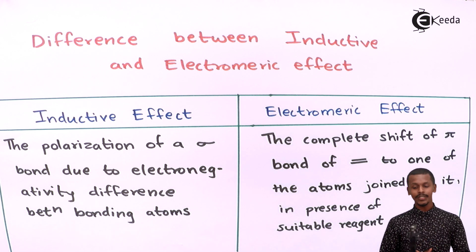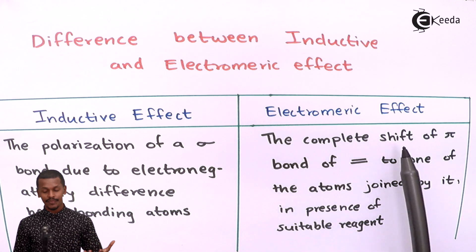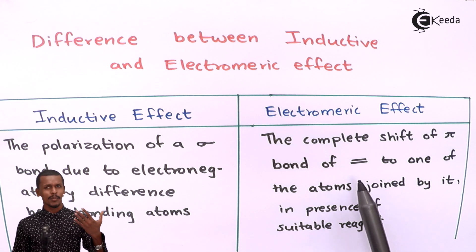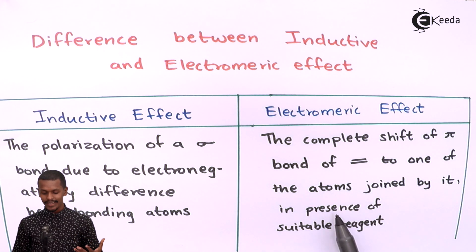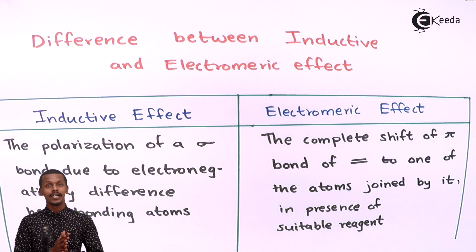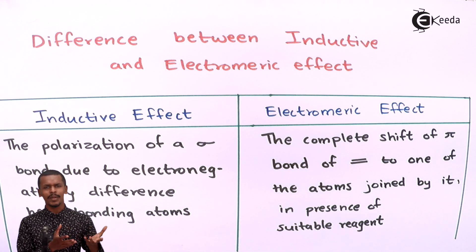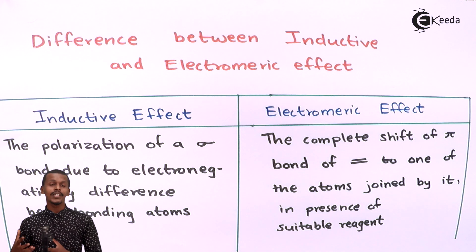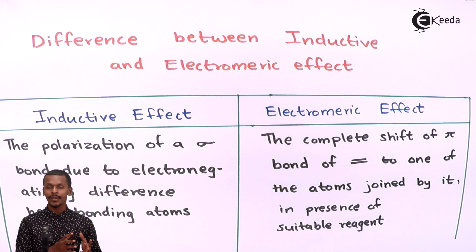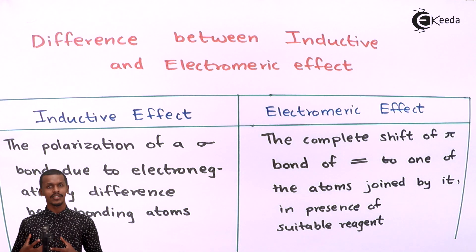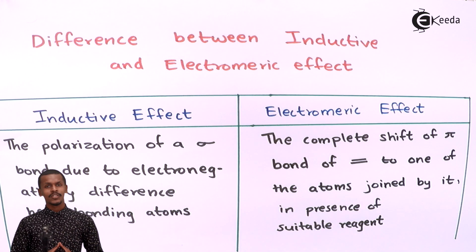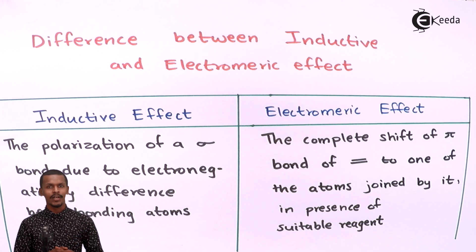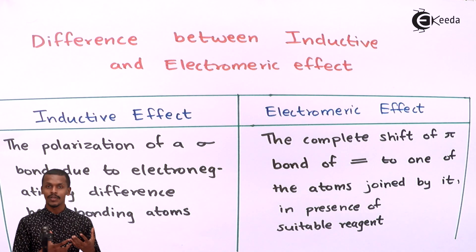Talking about the electromeric effect: it is the complete shift of the pi bond electrons of a carbon-carbon double bond, or any double bond, to one of the atoms joined by it, in the presence of a suitable reagent. This effect is only observed due to the complete shift of pi bond electrons toward an atom forming a multiple bond with another atom, and it is only shown in the presence of a suitable reagent. For example, when a carbonyl group is approached by an electrophilic reagent like AlCl₃, the carbonyl group — which is already polar — acquires more polarity because AlCl₃ is electrophilic.